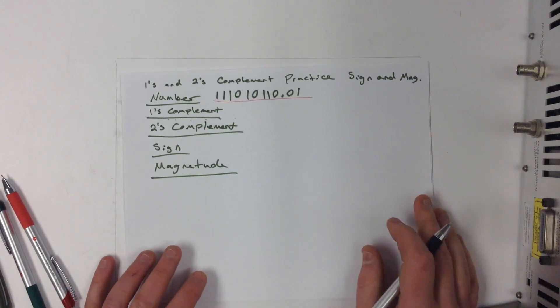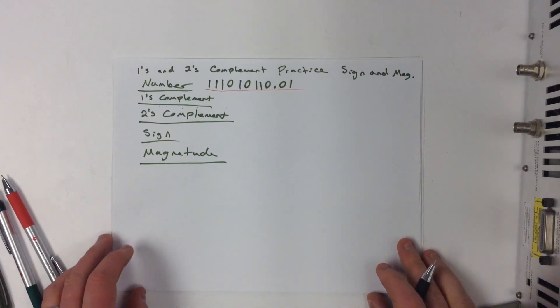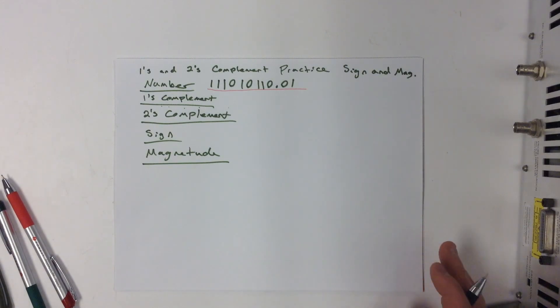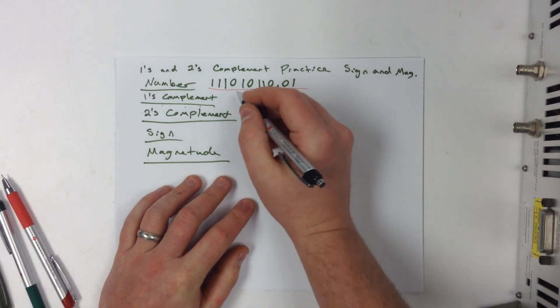So let's go ahead and start with 1's complement. 1's complement isn't used all that often. In fact, I usually just use it to get the 2's complement. The 1's complement is just a way of representing a negative binary number. Let's go ahead and show you how to do this.